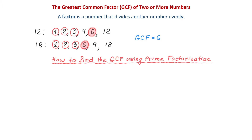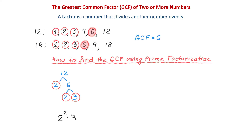First, we will find the prime factorization for 12. We will start by dividing 12 by 2. 12 divided by 2 is 6. Now, 6 divided by 2 is 3, and both 2 and 3 are prime numbers. Then, the prime factorization for 12 is 2 squared times 3.